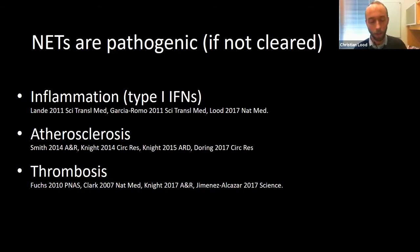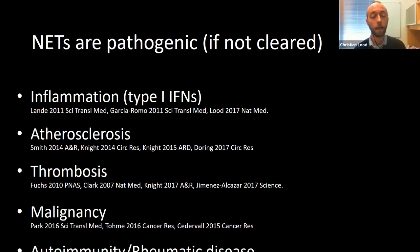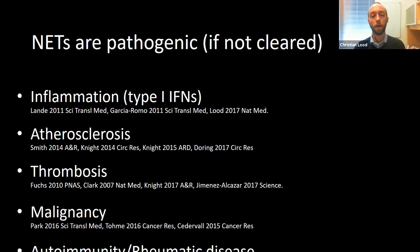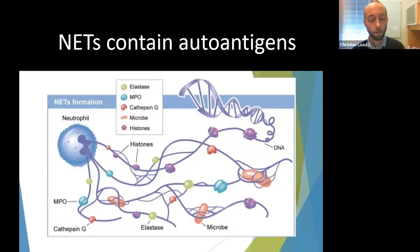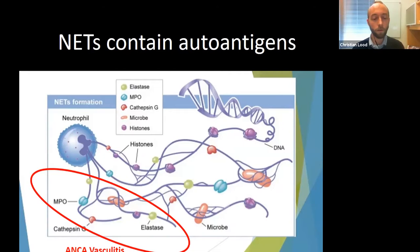NETs have also been linked to autoimmunity, particularly to several rheumatic diseases. The main constituents of the NET include myeloperoxidase — a key autoantigen in ANCA vasculitis — and neutrophil elastase, which is a key antigen in cocaine and levamisole-associated autoimmunity syndrome. We have done some work on this fascinating disease to highlight how NETs could contribute to this condition. It is a syndrome where patients who use cocaine adulterated with levamisole may develop purpura, ulcers, renal involvement, and arthralgia.